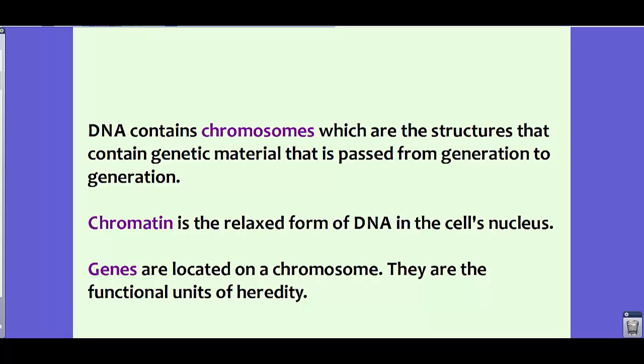DNA contains chromosomes, which are the structures that contain genetic material passed from generation to generation — your DNA actually came from your mother and your father. The term chromatin is the relaxed form of DNA in the cell's nucleus, and you'll see this as we go through the process of mitosis. Genes are located on the chromosomes and are the functional units of heredity. We'll get into heredity later in Chapter 14, but for now we'll focus just on mitosis.